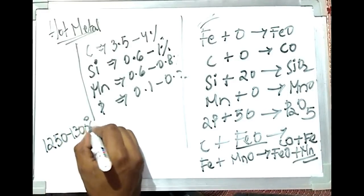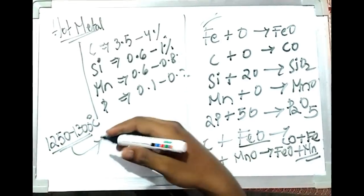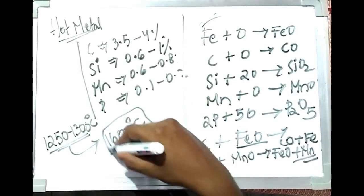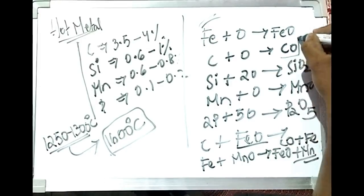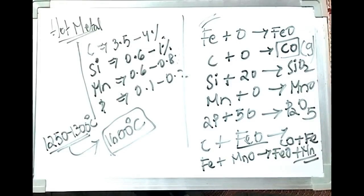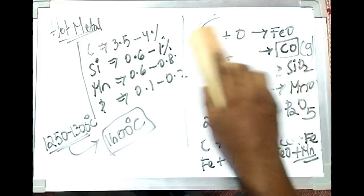Always remember: there is no external heat supplied in the converter — the heat produced by these chemical reactions is sufficient to raise the temperature. The hot metal from the blast furnace is at about 1250–1300°C, and this temperature is raised to the tapping temperature of about 1600°C due to these oxidation reactions. Only CO is removed as a gaseous product; all other elements are removed in the liquid phase forming slag. Oxygen is blown for about 15–20 minutes regardless of converter capacity.